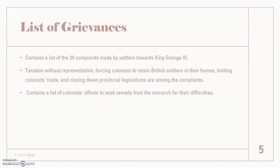It also talks about how the colonists had tried to seek remedy from the monarch for their difficulties. They tried to work in cooperation, but according to history, King George III and the parliament weren't cooperative and weren't willing to meet the colonists' demands. That left them with no choice but to leave and break from Great Britain.